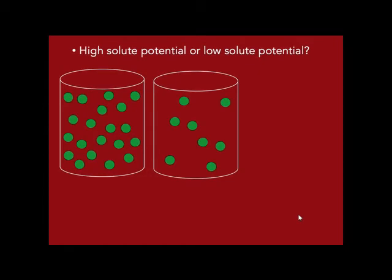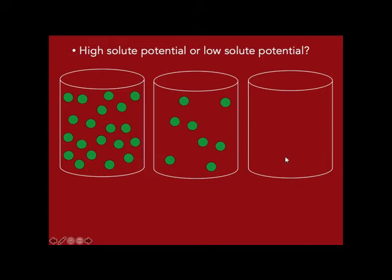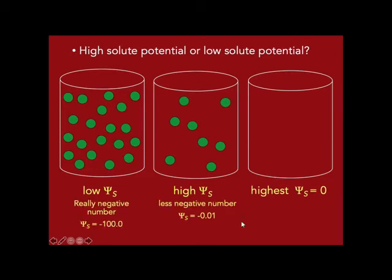Water goes from high solute potential to low solute potential. If we have multiple solutions — one with a really negative solute potential, one that's somewhat negative, and pure water at zero — water is going to move most strongly toward the most negative value. The most negative number here is the most negative solute potential, and zero is the highest. So water moves from zero toward the most negative number — from high to low solute potential.